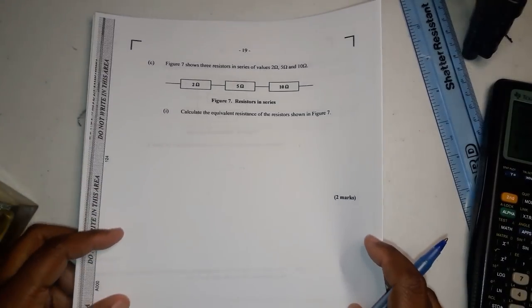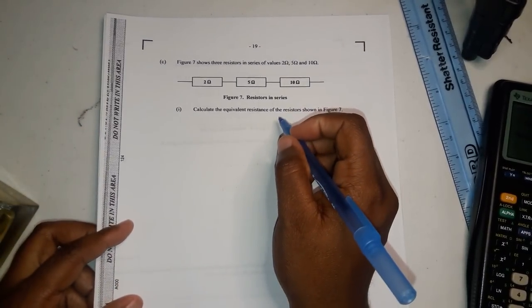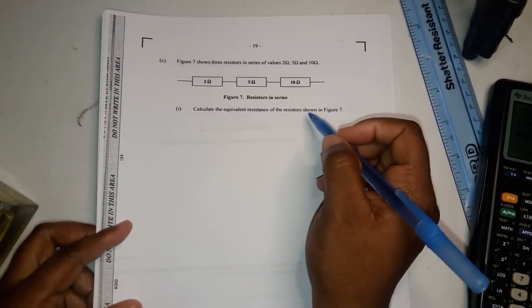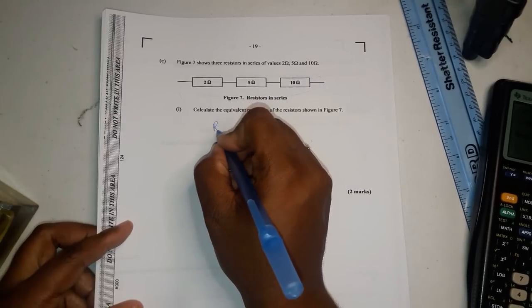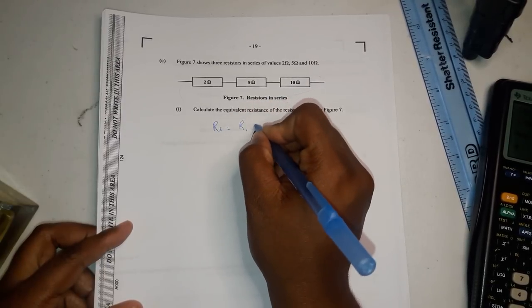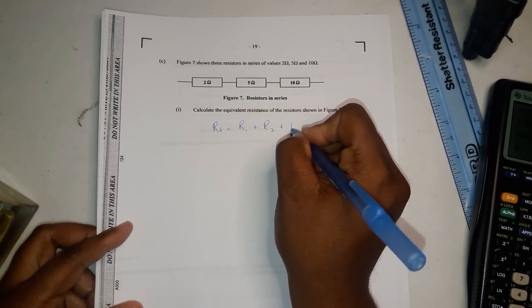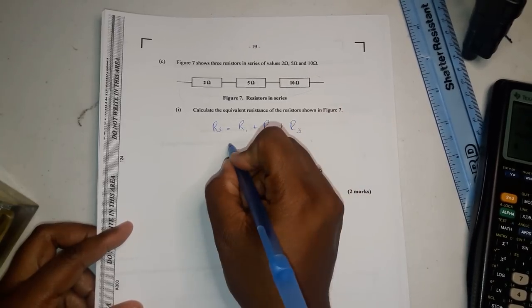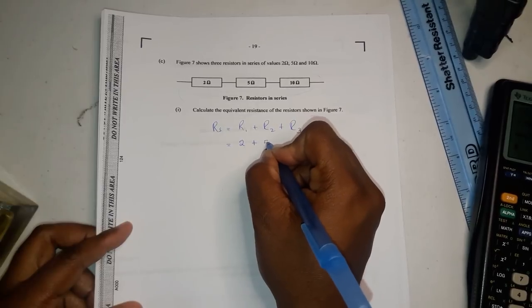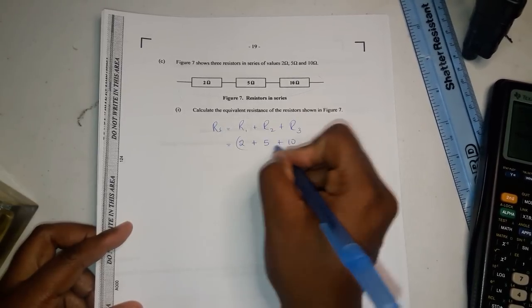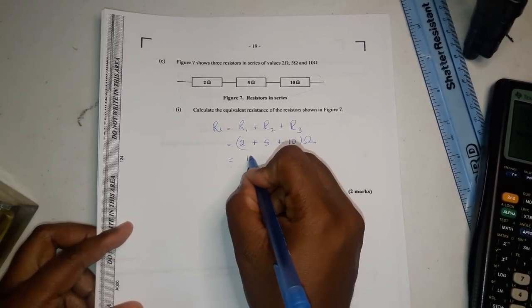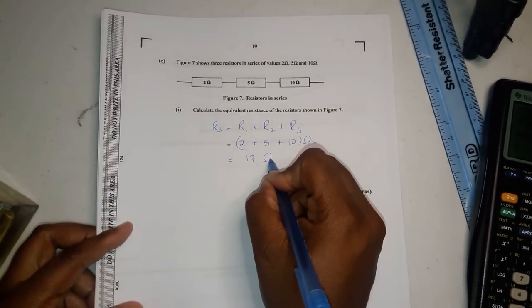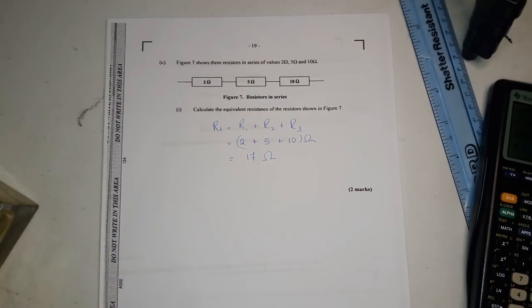Now figure seven shows three resistors in series of values two ohms five and ten ohms. Calculate the equivalent resistance to the resistors. Since they're in series you set Rs you just add them. You add them and so you get two plus five plus ten equal to seventeen ohms.